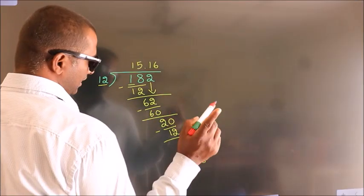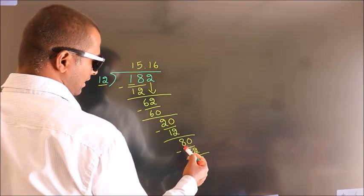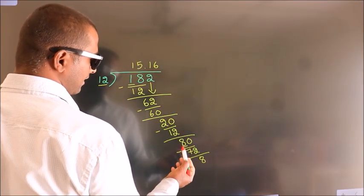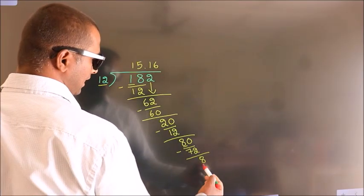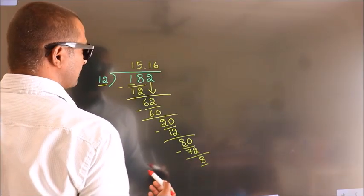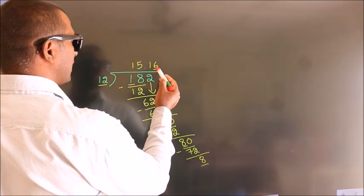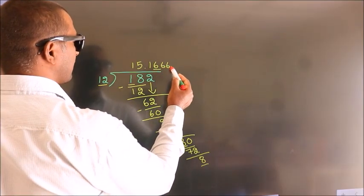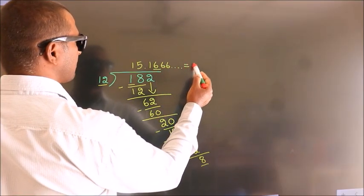Now you observe. Here we had 8, and we got 8 again. That means this number will keep on repeating. So this is our quotient.